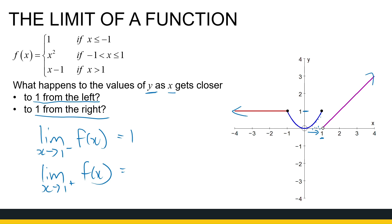Next, as x approaches 1 from the positive side — looking at this side now — x gets closer and closer to 1, and my y values get closer and closer to 0. Now later we're going to look at the significance when we bring the two together, but for now let's just look at from the left and from the right. It's easy with the sketch to visually see what happens. This is an intuitive approach; we're not using the precise definition at the moment.